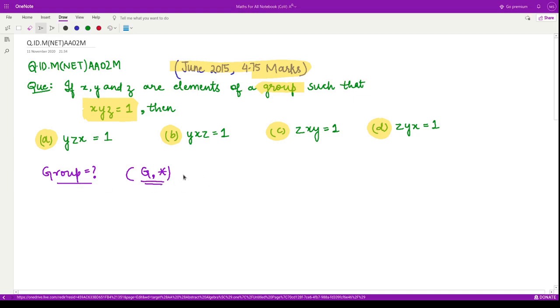The first property is associativity. That means if you take any three elements a, b, c from the group, then (a*b)*c should be equal to a*(b*c).